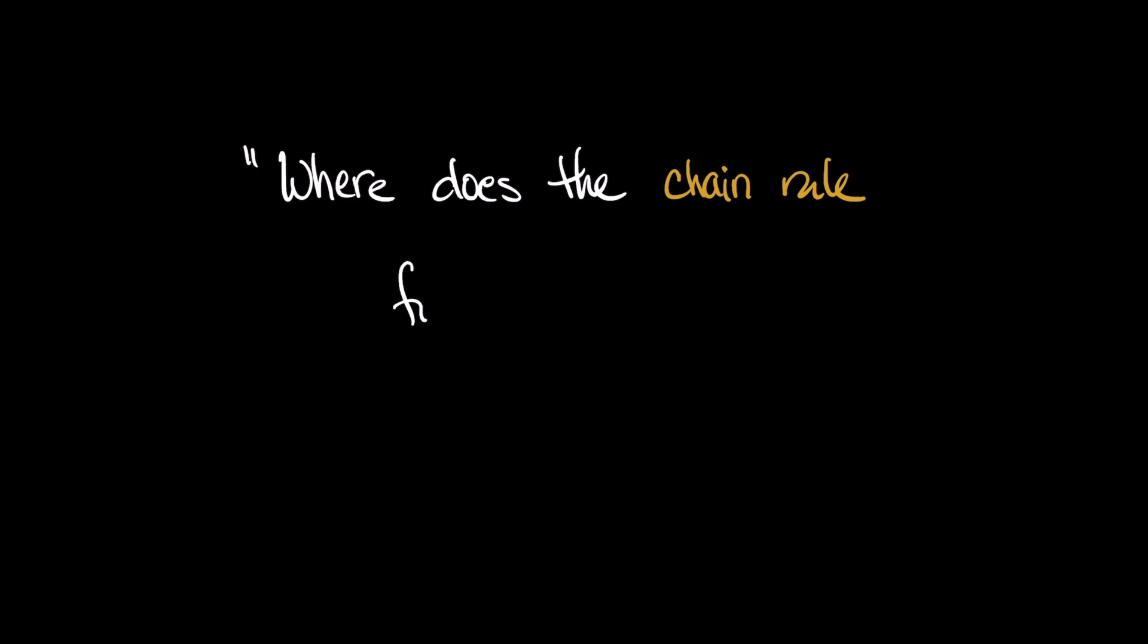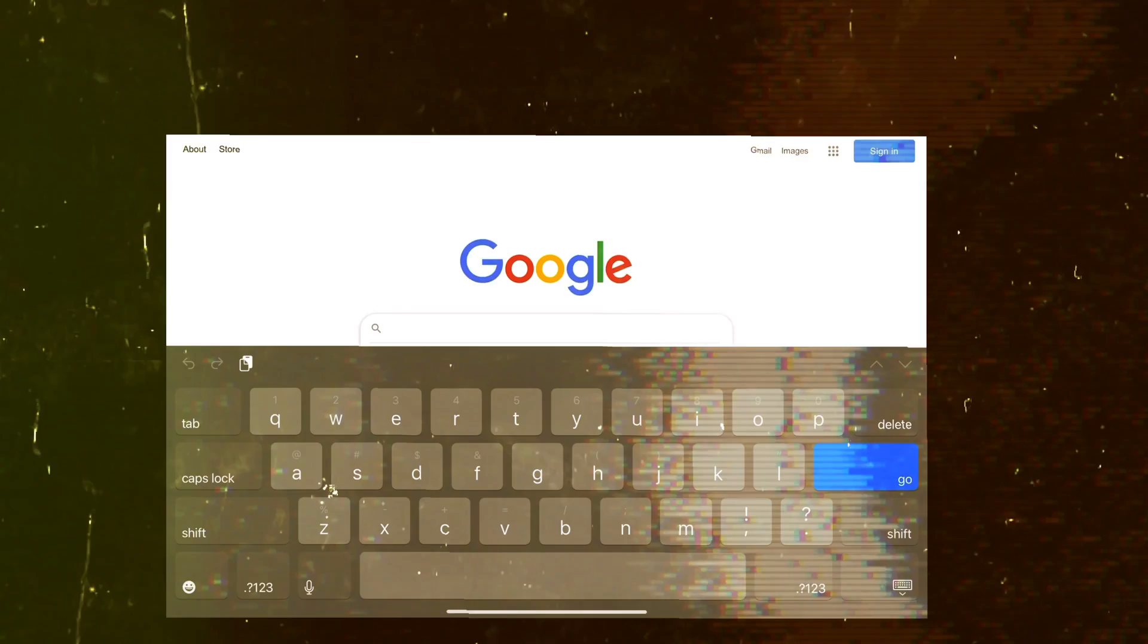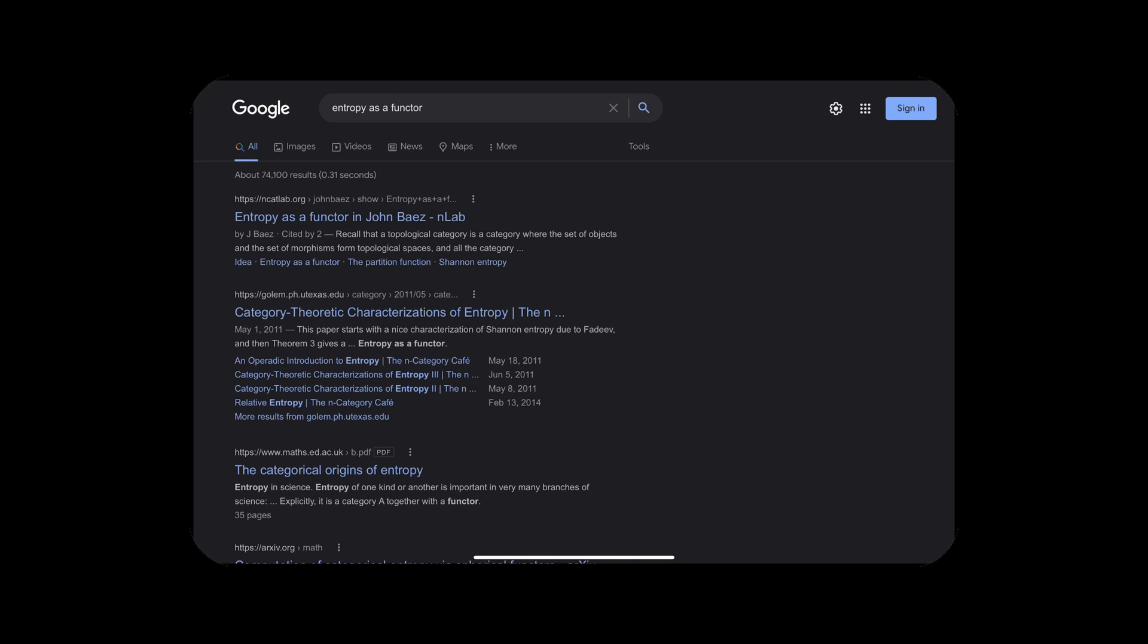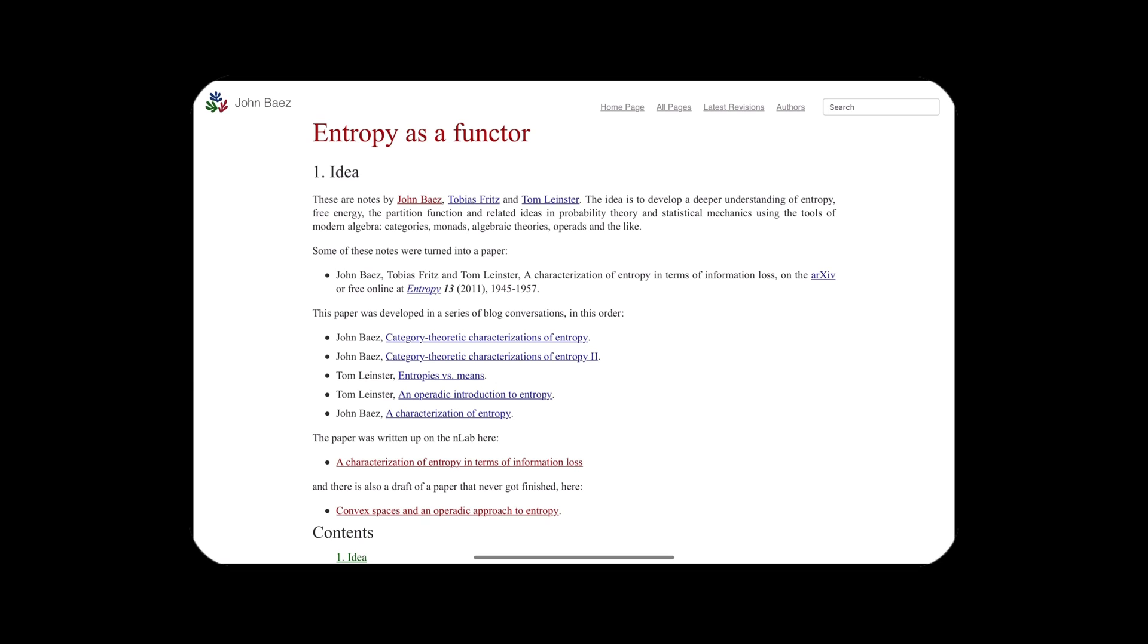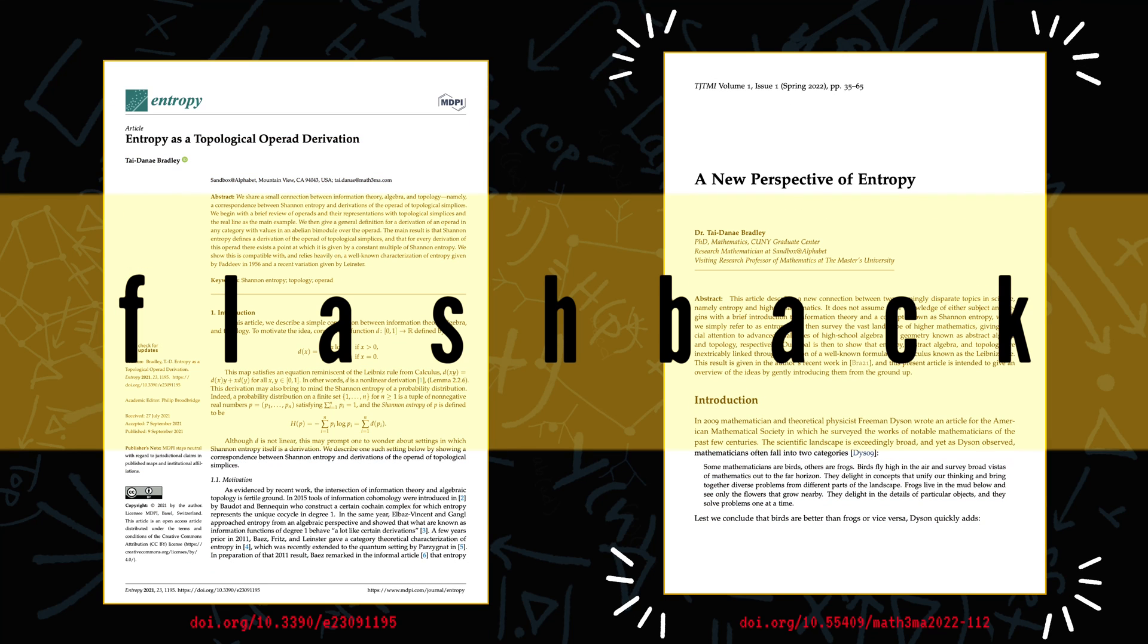And this prompts a new question. Where does the chain rule fit in the world of abstract algebra? What kind of thing is it? This very mystery was posed in a 2011 blog post by John Baez, and an answer is given in the papers I mentioned.